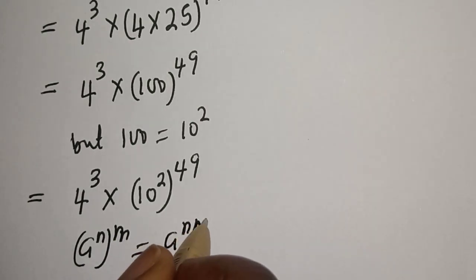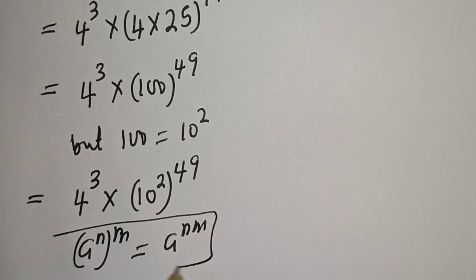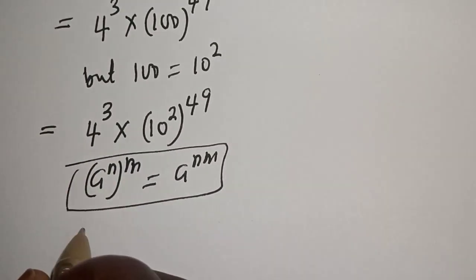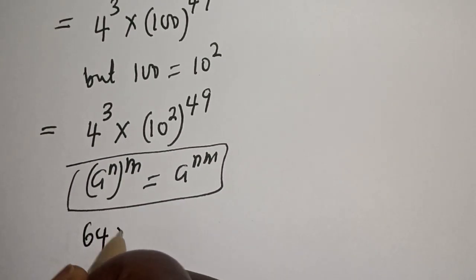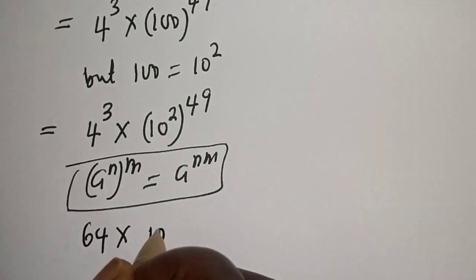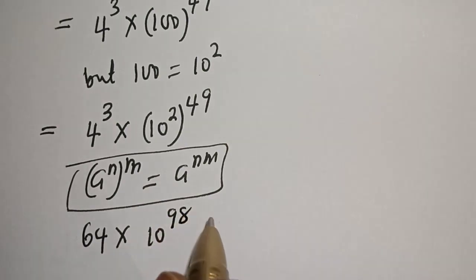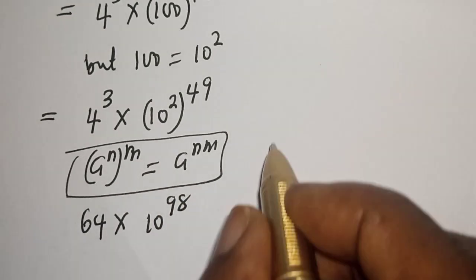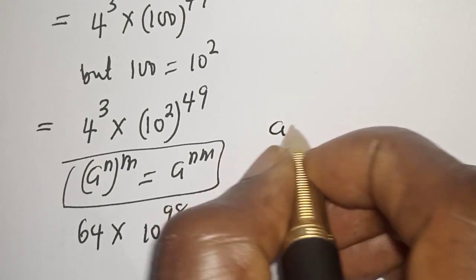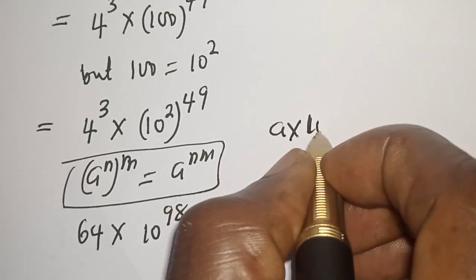4 raised to power 3 is 4 times 4 times 4, which equals 64. And 2 times 49 is 98, giving us 64 multiplied by 10 raised to power 98. But we want our answer in the form a times 10 raised to power b.